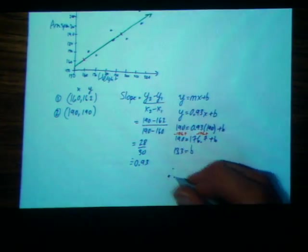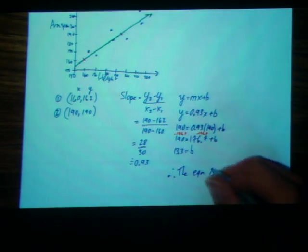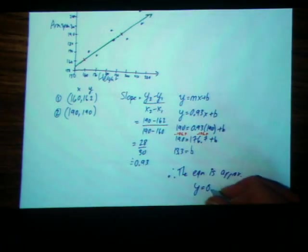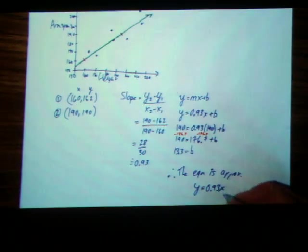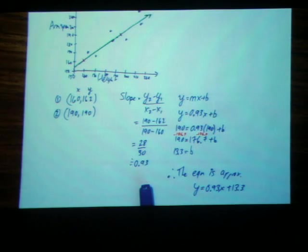And therefore, we've got our equation. The equation of the line of best fit is approximately y equals 0.93x plus 13.3. And we're done. We've determined the equation for the line of best fit shown in the graph. And we'll see you next time.